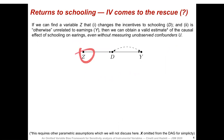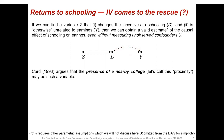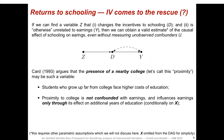If we can find a variable Z that first changes the incentive to schooling, and second is otherwise unrelated to earnings — meaning it's only associated with earnings through its association with schooling — then we can obtain a valid estimate of the causal effect of schooling on earnings, even without measuring the unobserved confounders. Card argues that the presence of a nearby college, called proximity, may be such a variable, because students who grew up far from college face higher costs of education, and proximity to college is not itself confounded with earnings and influences earnings only through its effect on additional years of education.